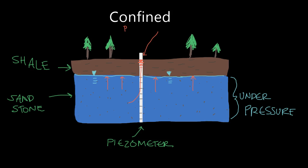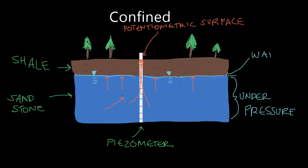In our confined aquifer, that is our potentiometric surface — it's higher than the water table because the water table is limited. It can't rise higher than the contact between the shale and the sandstone because the shale doesn't transmit water. That's the difference between the water table and the potentiometric surface in a confined aquifer. Remember, in the unconfined aquifer there was no difference between the two because that water was not under pressure — there was no overlying confining unit keeping it under pressure. So the water table would be the same as the level inside the well, because there's no pressure acting on that water to force it higher.